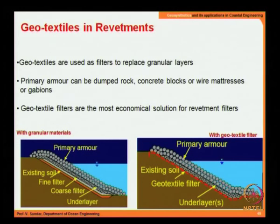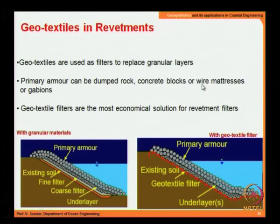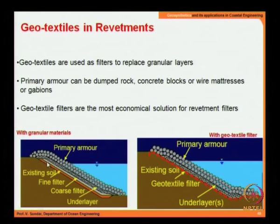Moving to geotextiles for revetments: these are used as filters to replace granular layers. The primary armor can be dumped rock, concrete blocks, wire mattress, or gabions. The geotextile runs through as shown in red, over which you have the under-layer or filter layers, and then the primary layer.